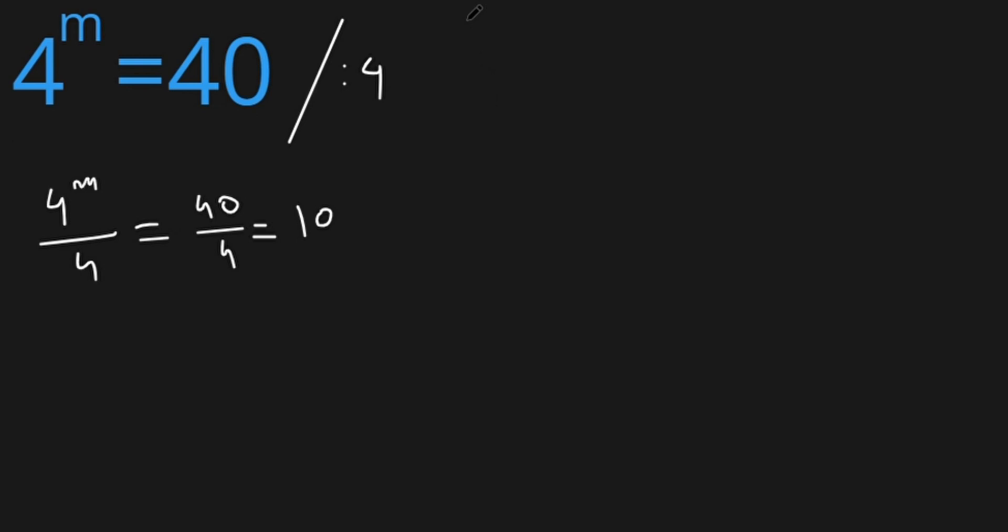Before we continue solving this problem, we need to know two formulas. a to the power of b divided by a to the power of c equals a to the power of b minus c.